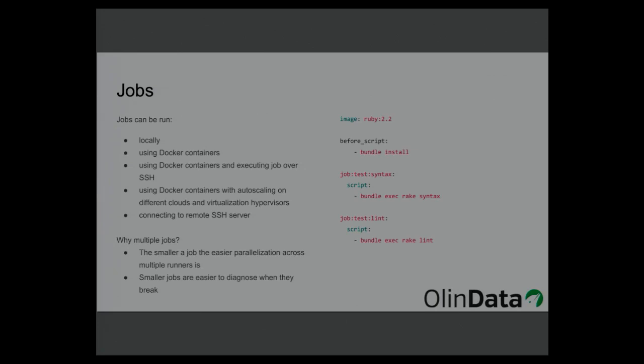I created job names here using the pattern 'job:test:syntax'. It's not actually necessary — you could just call it 'syntax' — but because we have things that are jobs and things that are not jobs in a GitLab CI file, I find it very convenient to prefix all jobs with 'job', then the name of the environment, then the name of the job. That makes it easier to grasp what runs where and when.